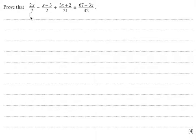Prove that 2x over 7 minus x minus 3 over 2 plus 3x plus 2 over 21 is equal to 67 minus 3x over 42 for all values of x.